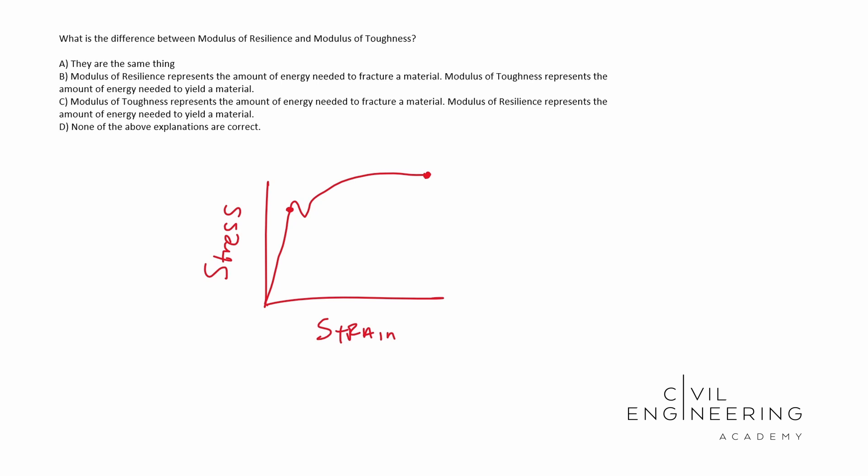Essentially what we're talking about is we have the modulus of resilience, modulus of toughness. Modulus of resilience actually happens at the yield point. So if you took the area underneath the yield point, that is your modulus of resilience.